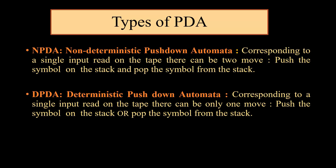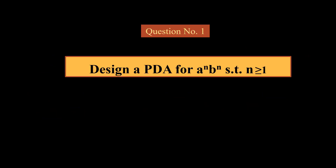We have two types of pushdown automata: non-deterministic pushdown automata and deterministic pushdown automata. Corresponding to a single input read on the tape, in non-deterministic PDA there can be two moves — push the symbol on the stack or pop the symbol from the stack. In deterministic automata, we have only one move corresponding to every single input — we can either push or pop the symbol from the stack.